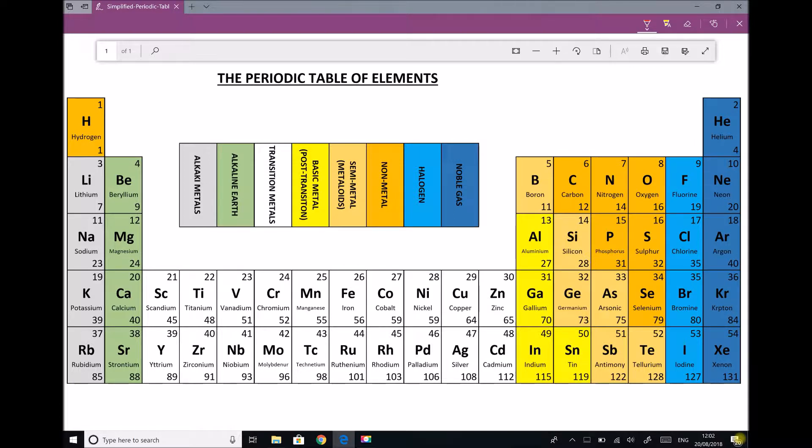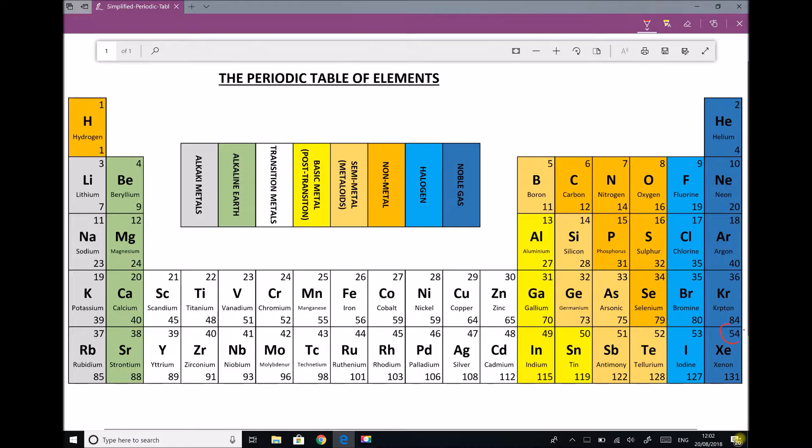Now another simplification that we have here is that I've only included the first 54 elements of the periodic table. We know that there's 54 elements because when we refer to the top right-hand corner, what we have is the atomic number. And in the far bottom right-hand corner, we have xenon with an atomic number of 54.